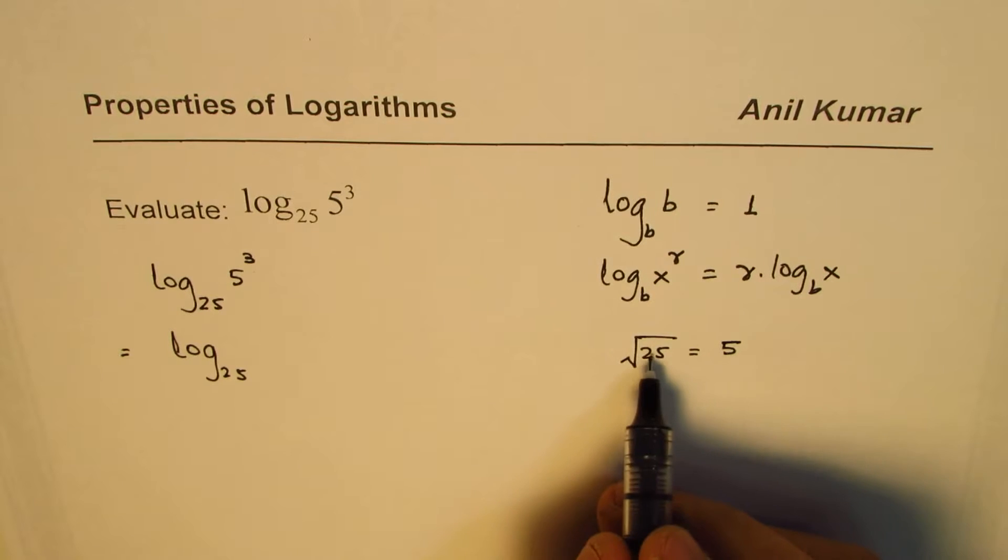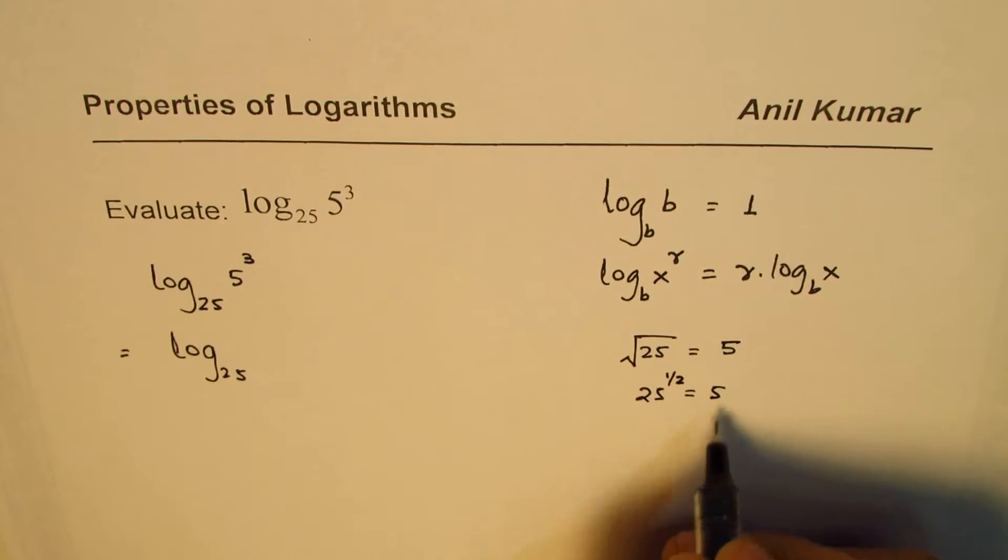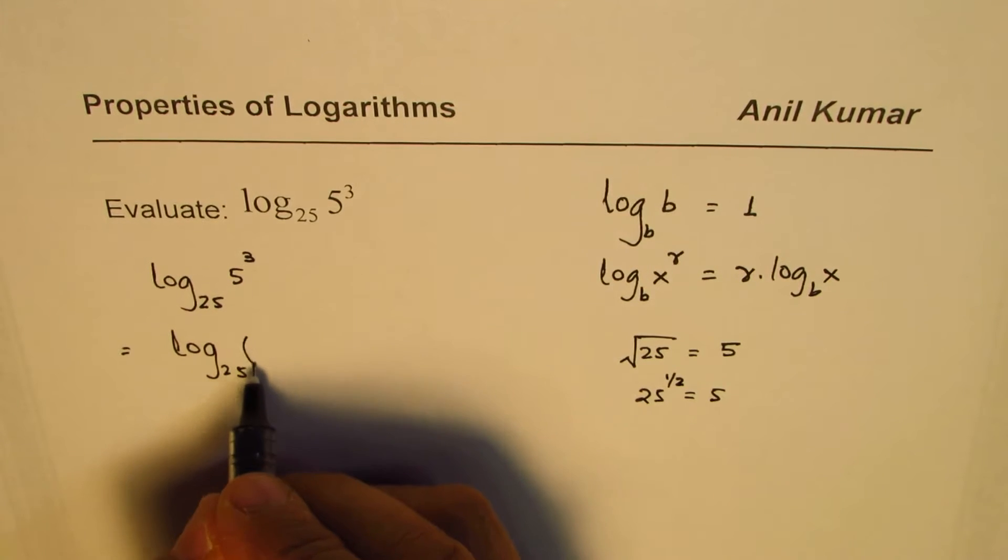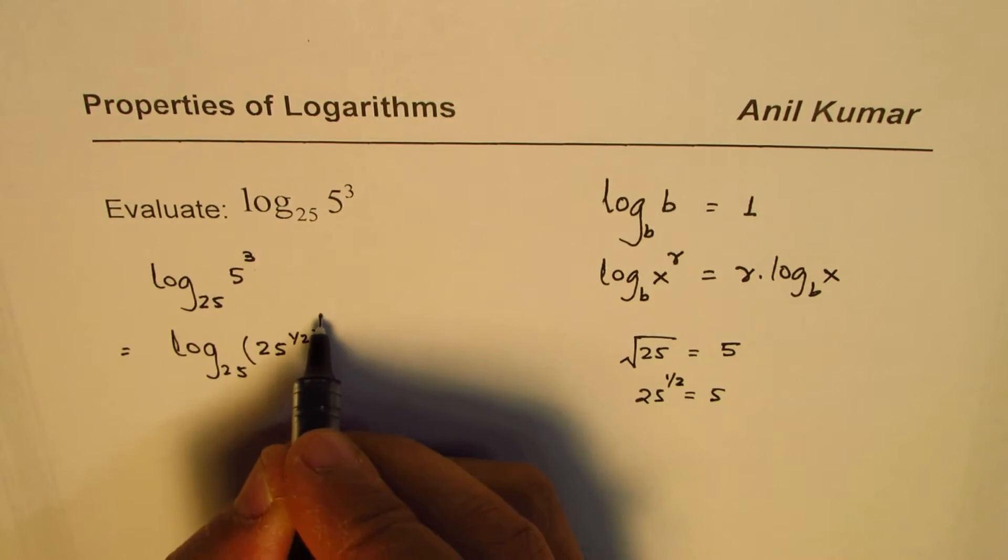So we could replace 5 with square root of 25, which is to say 25 to the power of half is 5. So I'll write 5 as 25 to the power of half. So this 5 is being written as 25 to the power of half, so we get cube here.